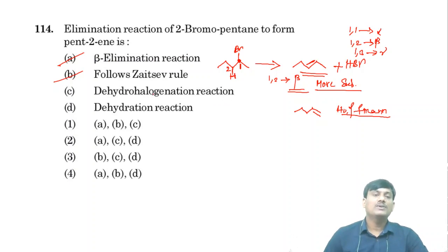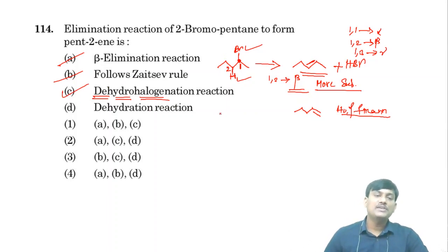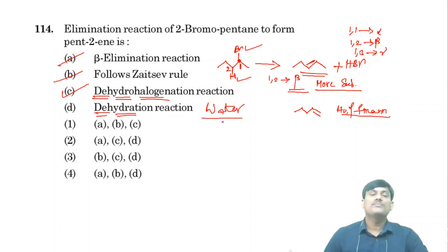Dehydrohalogenation reaction: 'dehydro' means removal, so it is the removal of hydrogen and halogen. Here there is removal of hydrogen and halogen, so it is a dehydrohalogenation reaction. Dehydration means removal of water (hydra = water). If a water molecule is removed from the organic molecule, it is called a dehydration reaction. In this case, there is no removal of water, so it is not a dehydration reaction.